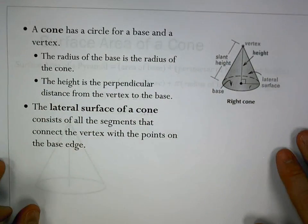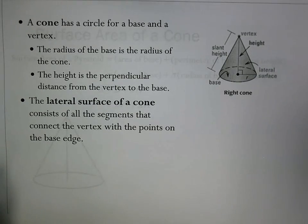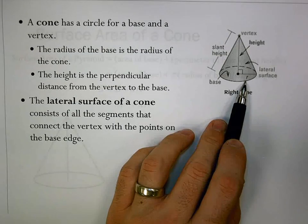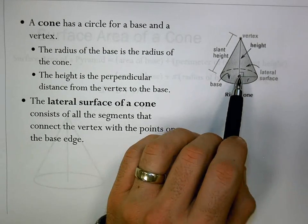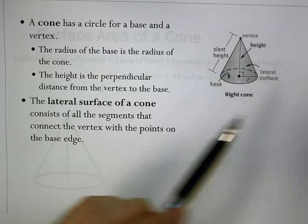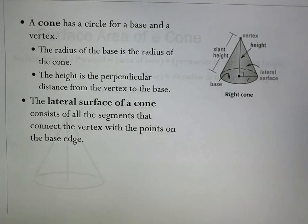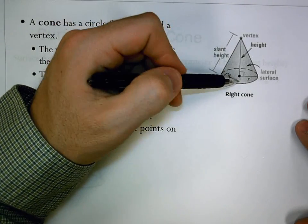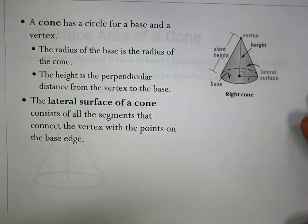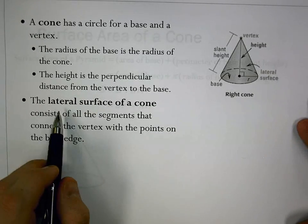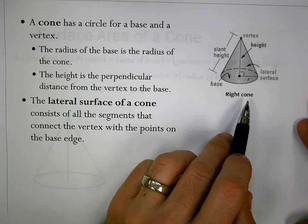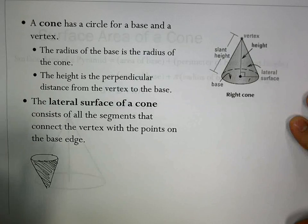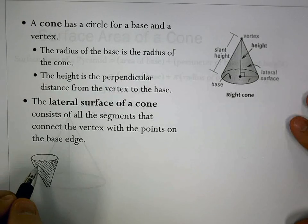Now let's look at a cone. A cone has the same idea as a pyramid, but with a circular base and a vertex. The radius of the base is the radius of the cone, and the height is the perpendicular distance from the vertex to the base. The lateral surface contains all segments connecting the vertex to the base edge — like the outside of an ice cream cone, where the open top is where the ice cream goes.